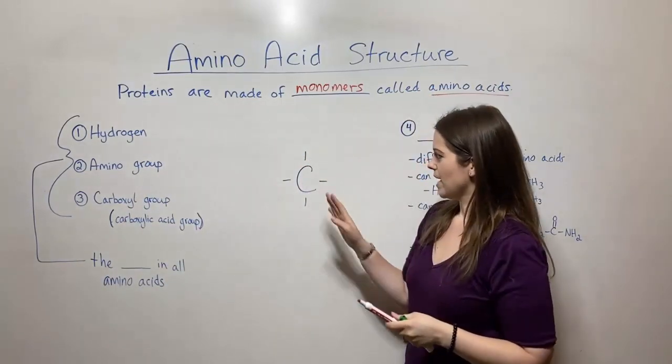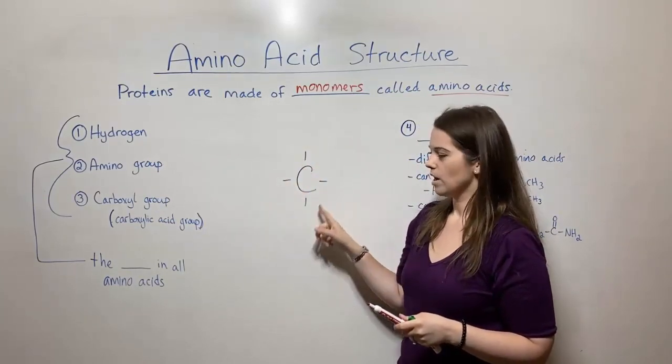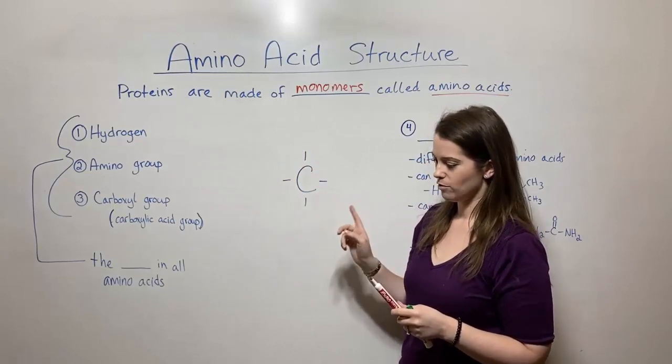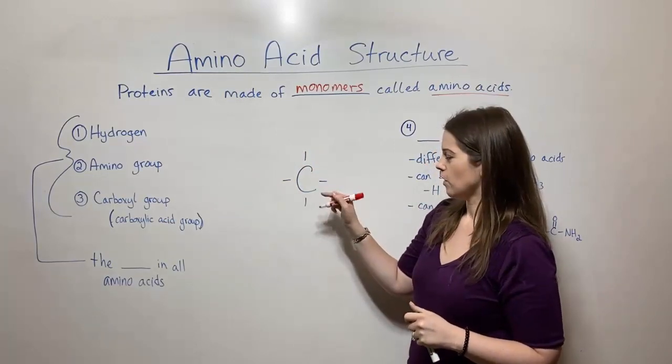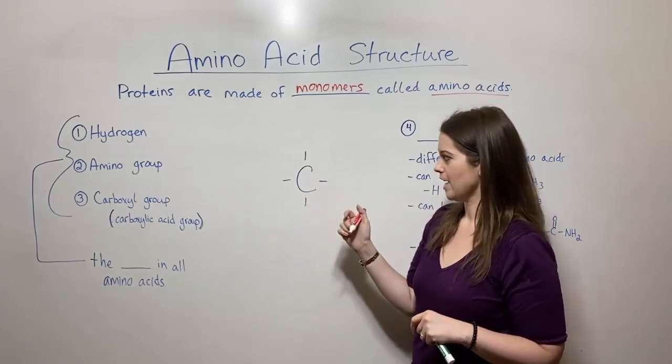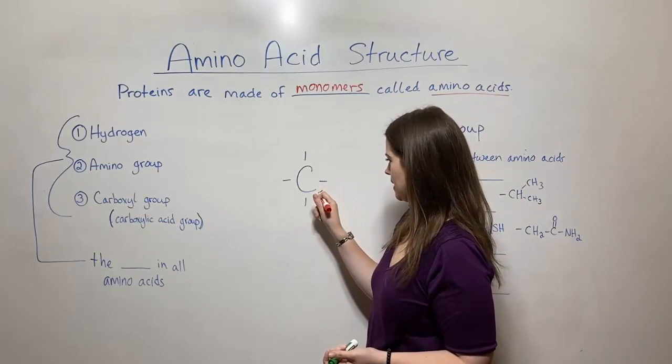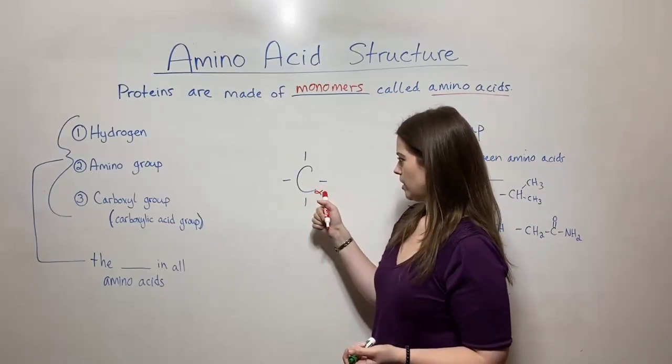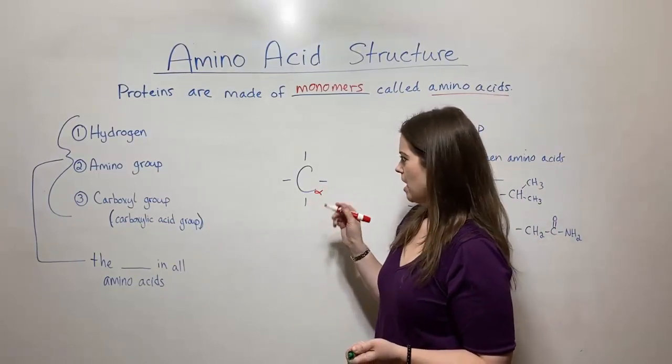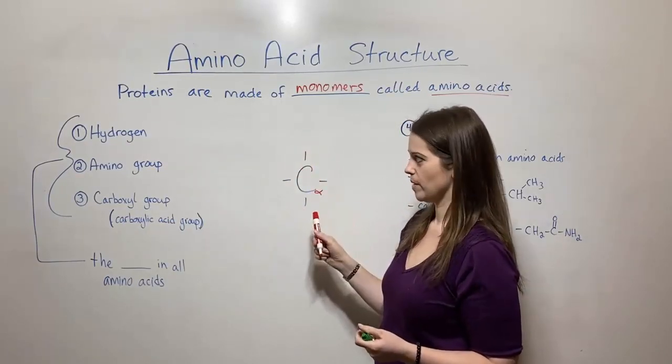Now an amino acid is a carbon with four attachments and they have to be fairly specific. First I want to talk to you about this carbon, the center carbon in the center of these four attachments. Sometimes it's called the center carbon but its more proper name is the alpha carbon. So I'm just going to put a little Greek letter alpha right there. That's the alpha carbon, it's the central carbon. And as I said, it has four attachments.